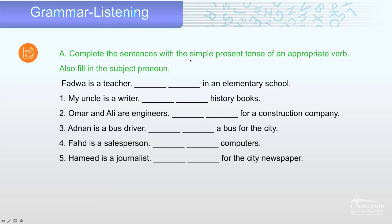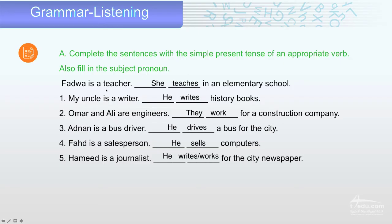Very important: read the question first, then pause the video, read and answer it. Now let's see the answers. Fatwa is a teacher; she teaches in an elementary school. My uncle is a writer; he writes three books. Omar and Ali are engineers; they work for a construction company. Adnan is a bus driver; he drives a bus for the city. Fahad is a salesperson; he sells computers. Hamid is a journalist; he writes or works for the city news. Don't forget to add S with the third person.